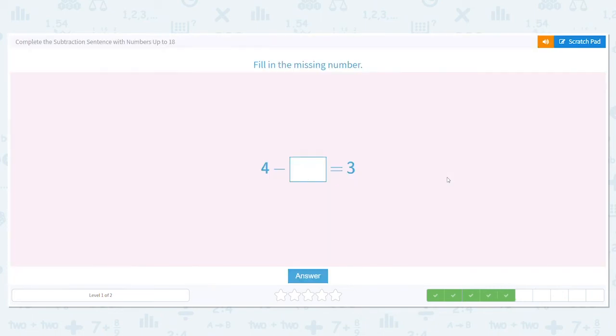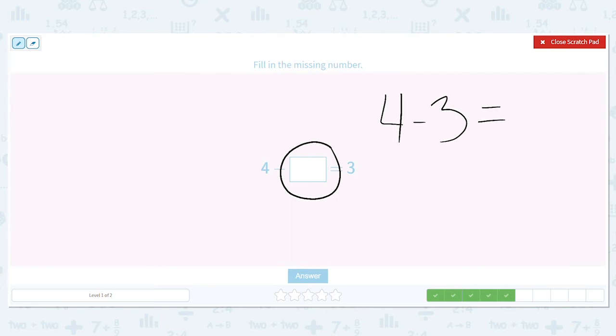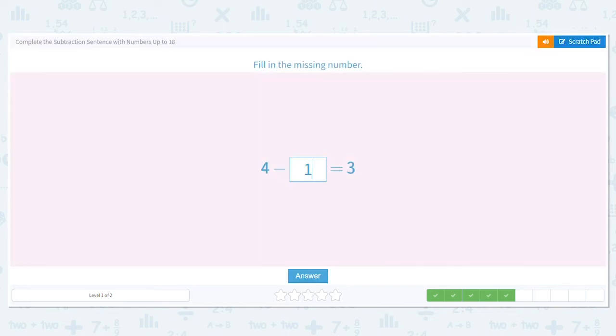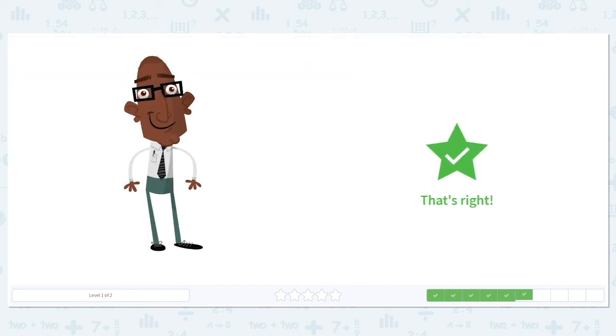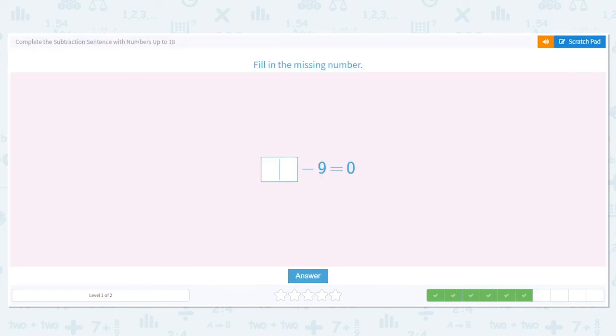Next up 4 minus a number equals 3. So I can use my fact family to help me. I'm going to take my 4 and subtract 3 from it to find out what goes in this box. We're just rearranging a little bit. 4 minus 3 equals what? It equals 1. So that also means that 4 minus 1 equals 3. We're using the same numbers, just rearranging them.